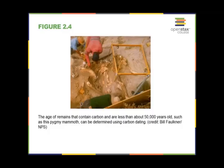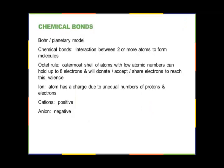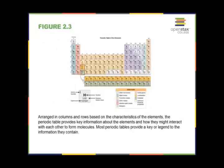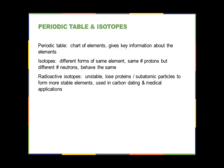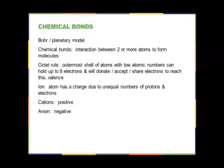When we look at chemical bonds we need to look at models of atoms. The easiest model to understand is the Bohr model, or planetary model, which we looked at a couple slides back — with the nucleus in the center like a sun, and the electrons going around the outside like planets. Chemical bonds are the result of interaction between two or more atoms to form a molecule.